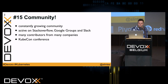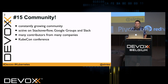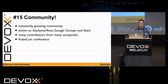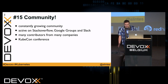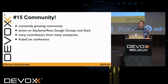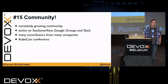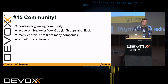Last but not least, the community. There is a constantly growing community — Kubernetes is used by more and more companies. There is active discussion on Stack Overflow, Google Groups, and Slack, and many contributors from many companies. It even has its own conference: KubeCon in Seattle with around 1,000 attendees. The next KubeCon in Europe will be in Berlin in March 2017 with capacity for 1,500, and next December's edition in Austin will have capacity for 3,000 attendees.